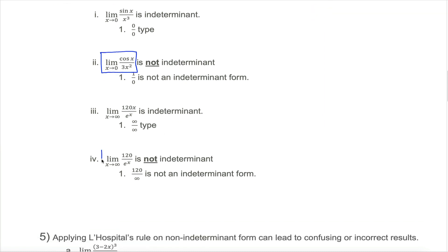Similarly, the limit as x approaches infinity of 120 divided by e to the x would have been fair in the previous section. You'd think about end behavior: the top is not growing, but the bottom is getting arbitrarily large. When the bottom gets arbitrarily large and the top doesn't, the limit approaches 0. These limits could have been determined in the previous section, so they are not indeterminate.